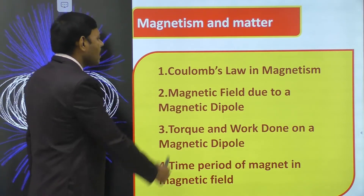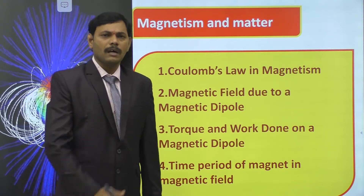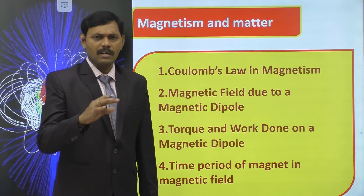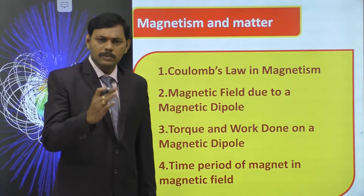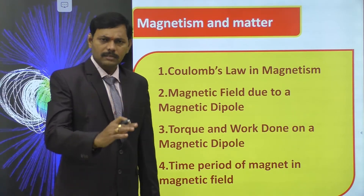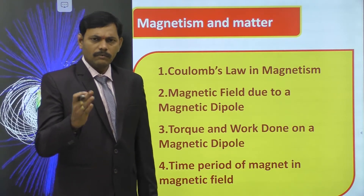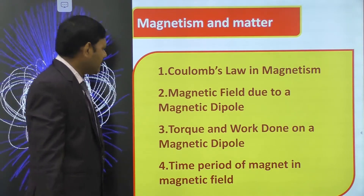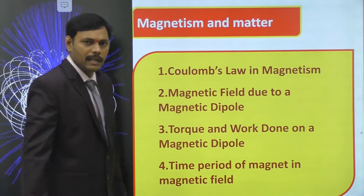First one is Coulomb's Law in Magnetism. We already know about Coulomb's Law in Electrostatics — the force of attraction or repulsion between charges was explained there. Similarly, the force of interaction between magnetic poles will be discussed as the first concept: Coulomb's Law in Magnetism. Second one is magnetic field due to a magnetic dipole.